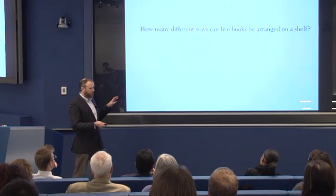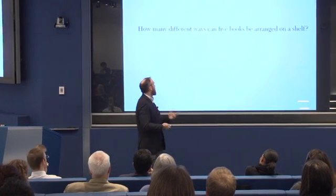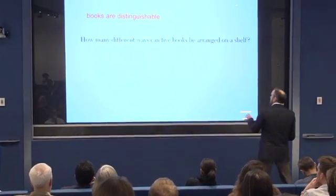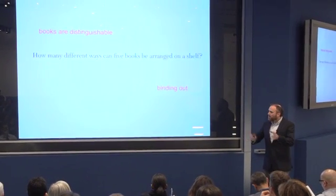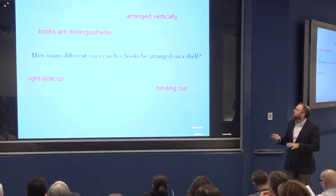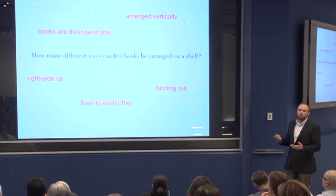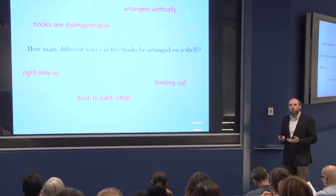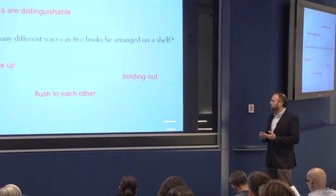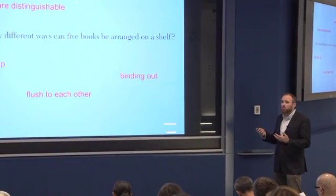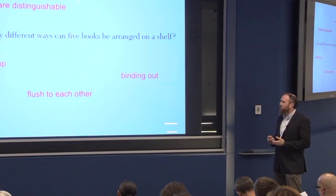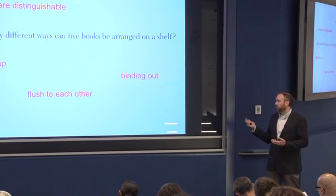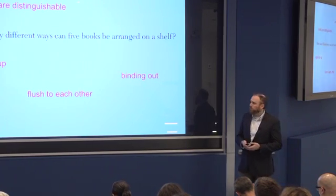So we'll return to this question. And just for a moment, think about all of the assumptions that we have about this problem that we never think about. Like that the books are distinguishable and that the bindings are out and that they're right side up and they're arranged vertically and they're flush to each other. These are things that we unconsciously assume about the problem. So we don't ask these questions, and students don't ask these questions.